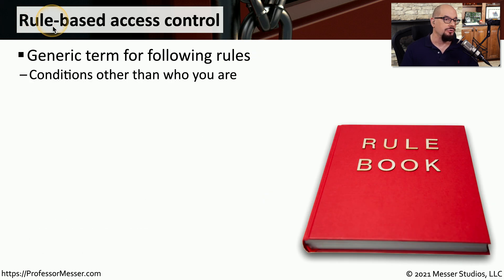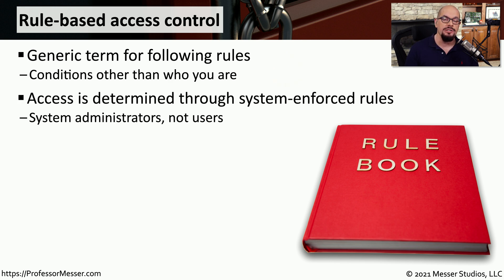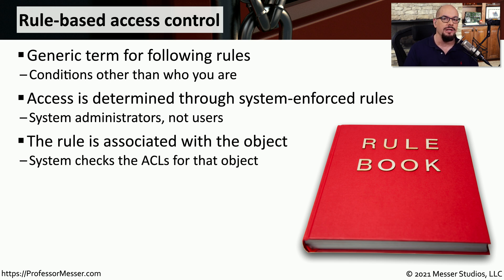Another type is rule-based access control, which is a more generic term that can be applied across many different operating systems or ways to allow access to a resource. With rule-based access control, the system administrator sets the rules — users do not get to define access. The rules are generally associated with the object being accessed, so if someone is trying to gain access to a network, the rules are associated with that particular network, or if they need access to a spreadsheet, the rules are specific to that spreadsheet.